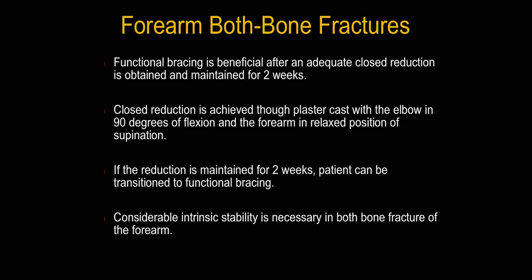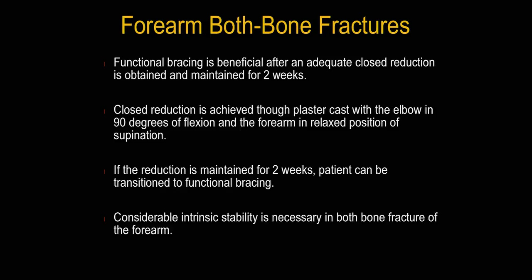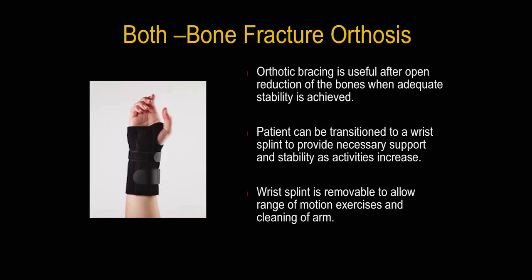Forearm both-bone fractures get complicated. We provide a functional brace that is beneficial after adequate closed reduction maintained for two weeks — both-bone meaning both the ulna and radius have been fractured. If the reduction is maintained for two weeks, the patient can be transitioned into functional bracing, generally after a cast. Considerable intrinsic stability is necessary in both-bone forearm fractures. The patient can be transitioned into a wrist splint after the cast, or sometimes pre-casting, depending on where the patient is in the healing process.